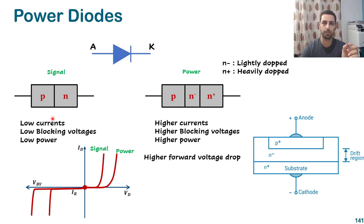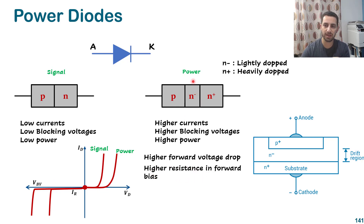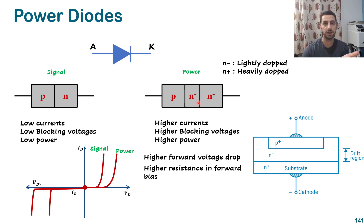We used to have about 0.7 or 0.5 volt drop across a signal diode made of silicon, but for a power diode you are looking at one volt and higher — from one to two volts forward voltage drop. That's why the IV curve is extended because the forward voltage is higher than the signal diode. The breakdown voltage is also higher. We also have higher resistance in forward bias, which sometimes introduces a small resistance that should be considered in power dissipation calculations.